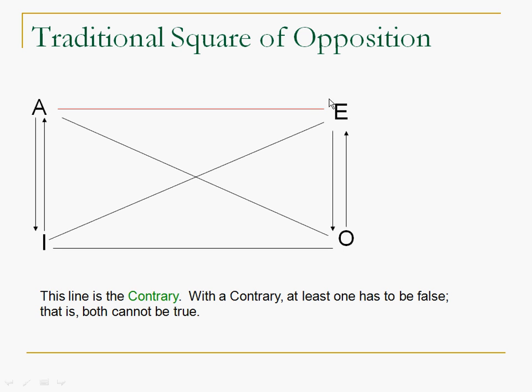It's equally false that all dogs are poodles and no dogs are poodles. So, one of them does not have to be true, but they cannot both be true. You can't say all dogs are poodles and no dogs are poodles. That wouldn't make any sense if there were dogs.